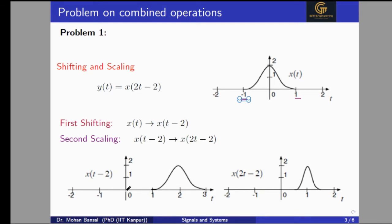Initially the signal was starting at minus one — now it will start at minus one plus two, which means it will start from one. The signal was initially ending at one, and now it will end at one plus two, which is three. The center of the signal was zero, and now the center of the signal is two. The magnitude and width are the same; only the signal is shifted to the right side by a factor of two.